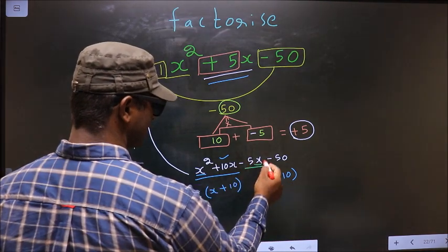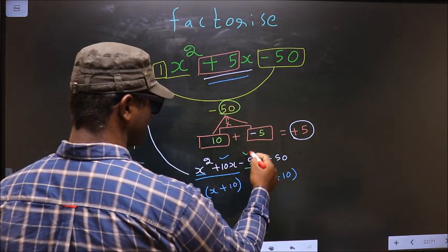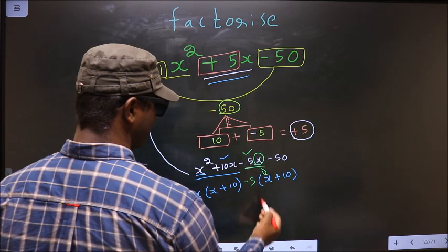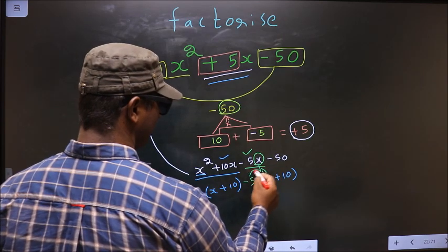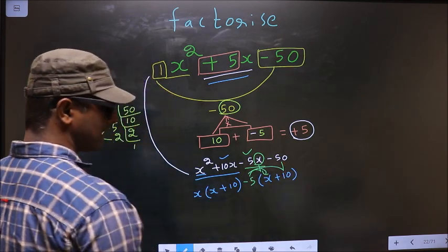Now from this x has gone inside, so outside you are left with -5. Even if you multiply and see, still you get the same thing.